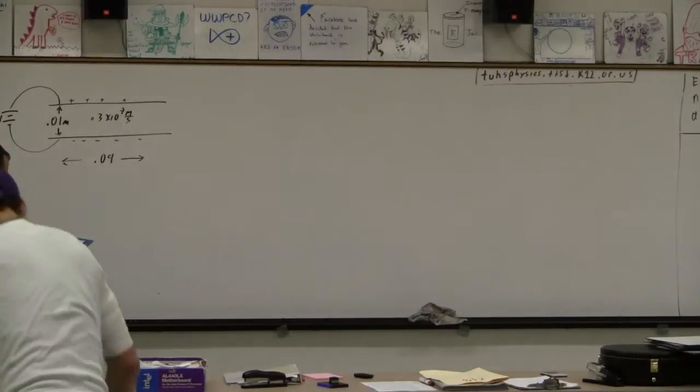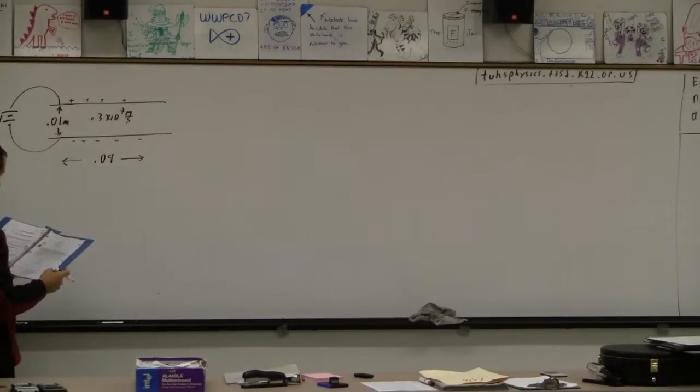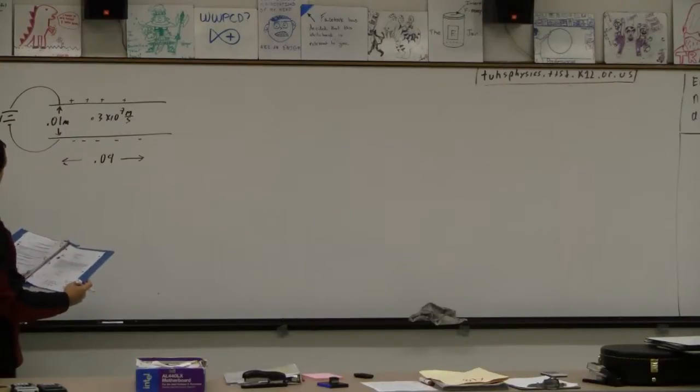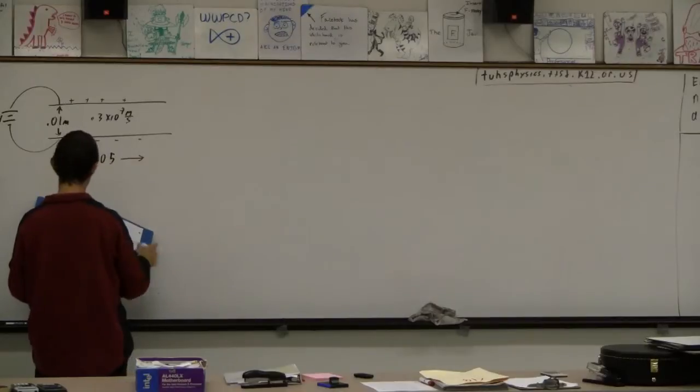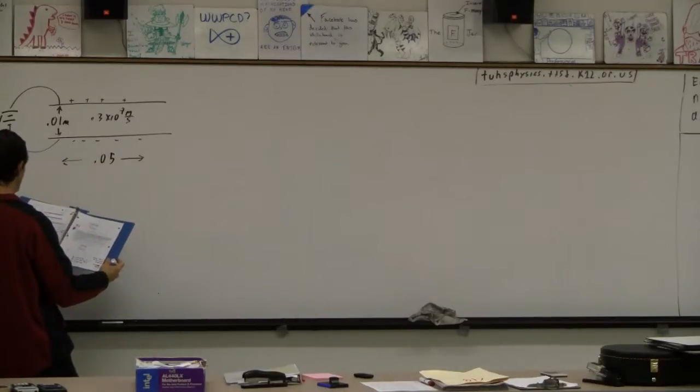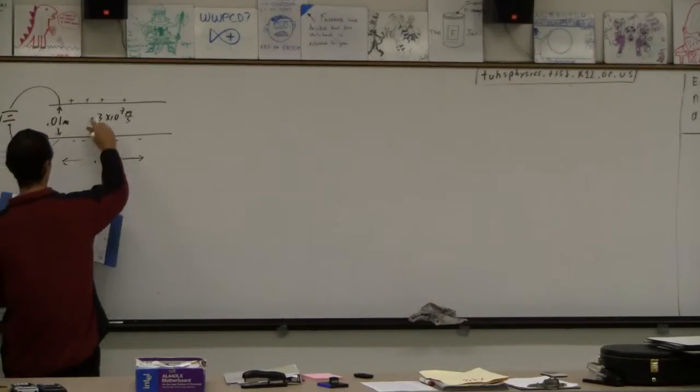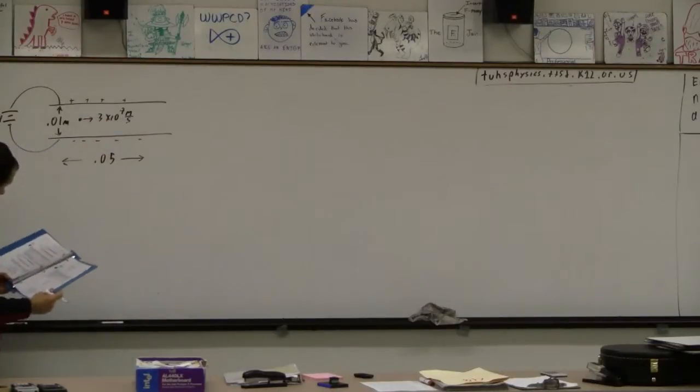So, oops, what am I doing? This is 0.05, sorry. I'm looking at this problem over here. 0.05, 0.01, three times ten to the seventh. So this electron is flying this way, three times ten to the seventh meters per second.